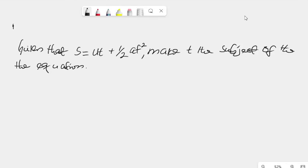Okay, in this lesson, we're going to solve this interesting question. It says, given that S is equal to UT plus half AT squared, make T the subject of the equation.